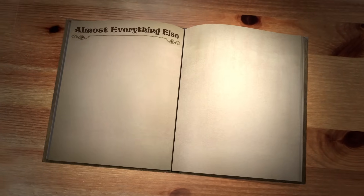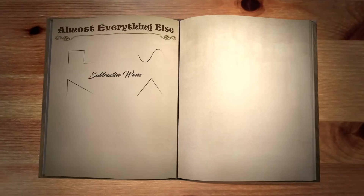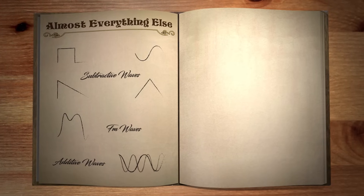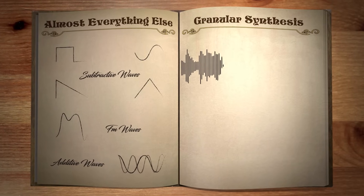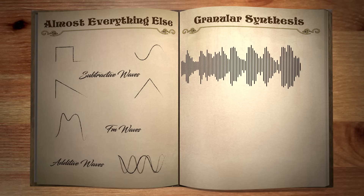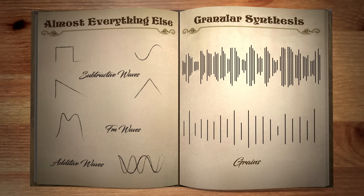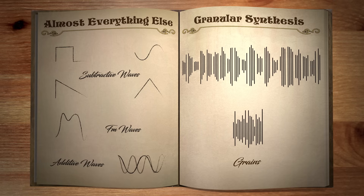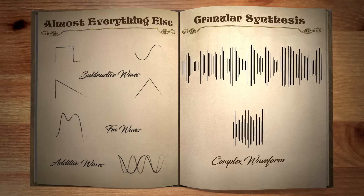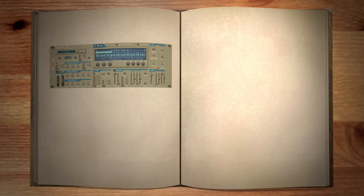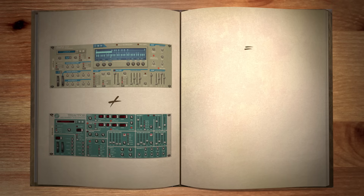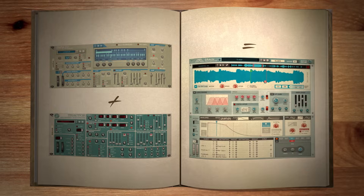Unlike almost every other style of synthesis, which involves generating singular oscillating electrical waveforms, granular synthesis instead takes any digital audio file and chops it up into very tiny segments, or grains, and then puts those grains back together to form complex waveforms with movement and timbres that analog synth emulations can't approach. Granular synthesis borrows heavily from the technology born out of samplers, and because of that, it still often feels like a hybrid between a sampling and synthesis mindset.